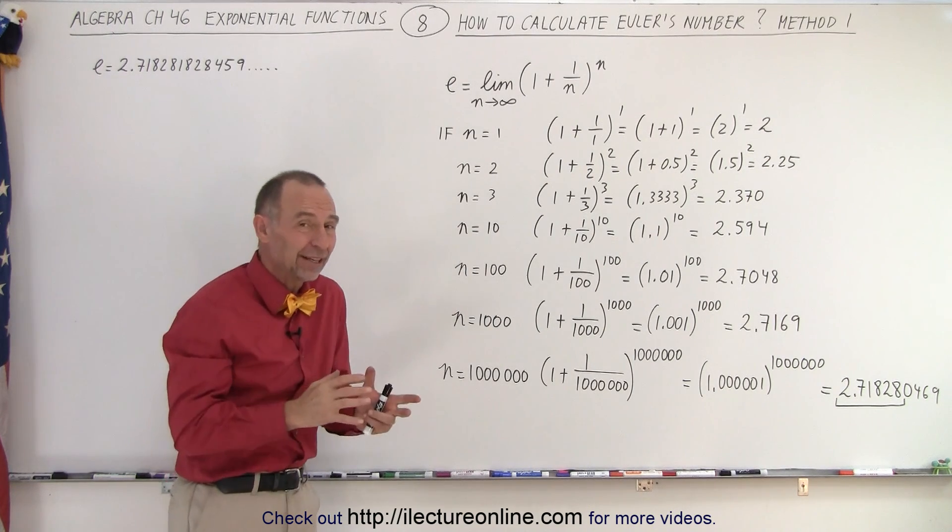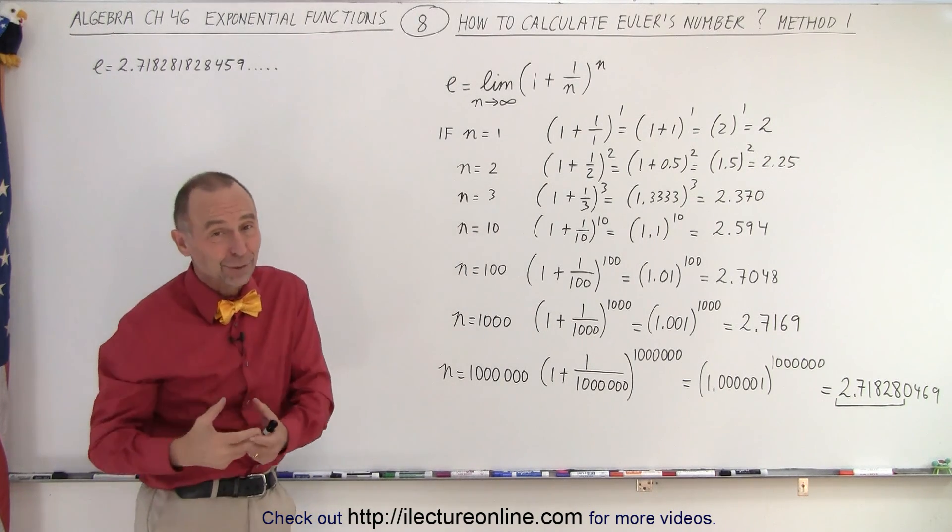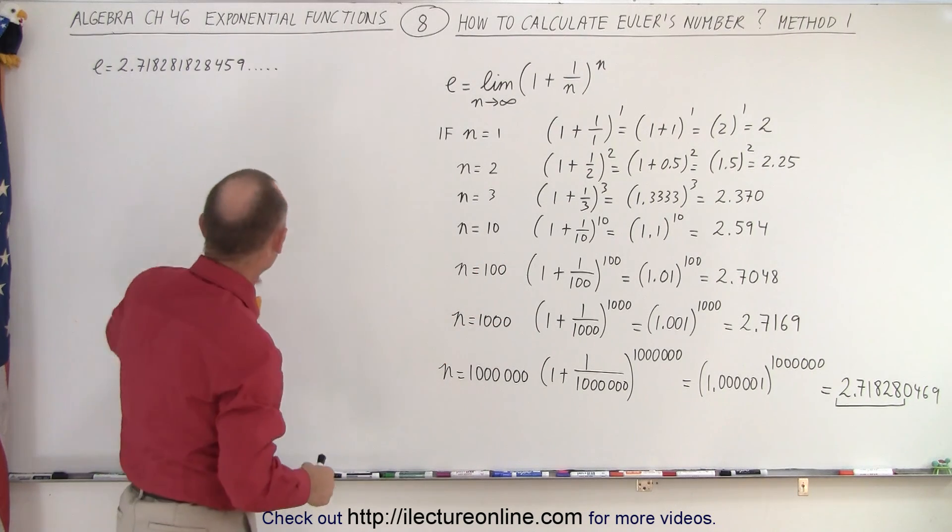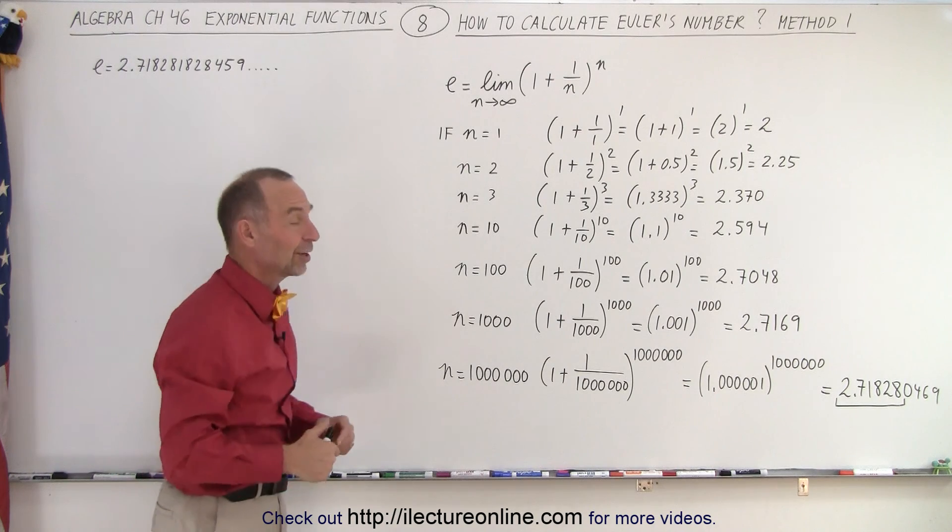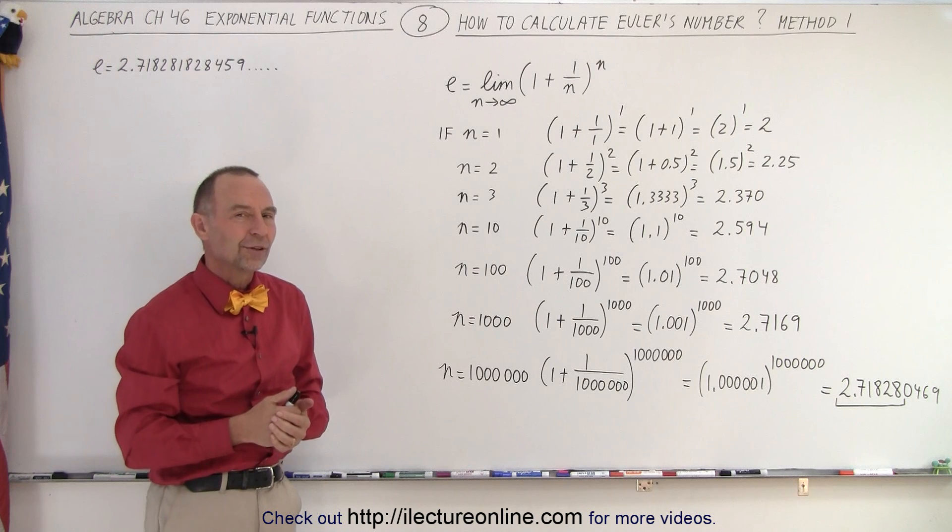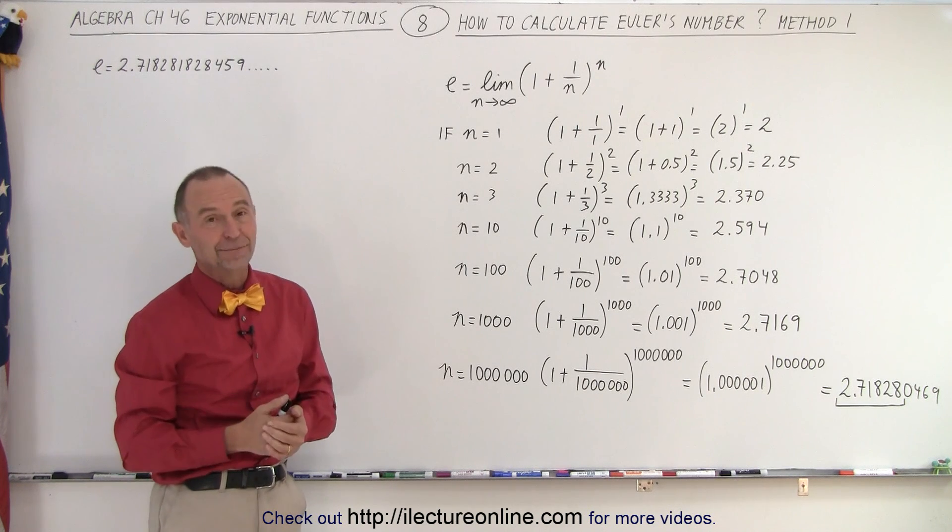When we get to infinity, then the number is exactly Euler's number. Of course, we can never get to infinity, so we can never get to the exact value of Euler's number, but we can get it correctly to a fair number of decimal places, and that's why we have these kinds of numbers here. We can actually calculate it using this method right here, what Euler's number is. And this is how it's done.